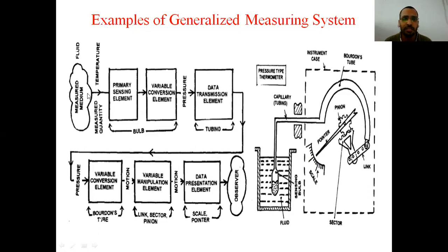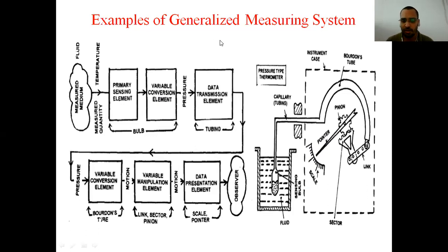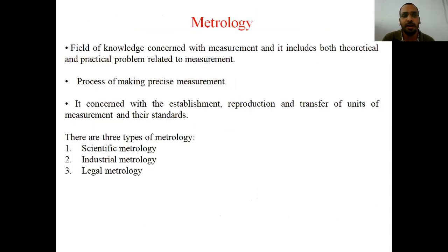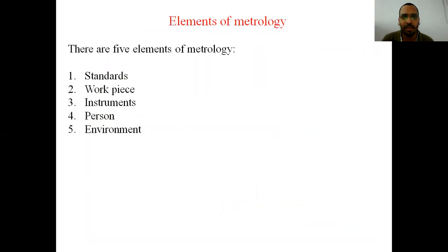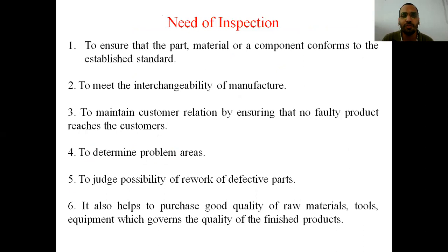In this way, we can draw a generalized measuring system for any measuring device. We only need to know the function of the primary sensing element, the variable conversion element, the data transmission element, and the data presentation element. In the next lecture, we will discuss metrology and types of metrology, elements of metrology, and the need for inspection. Thank you so much.